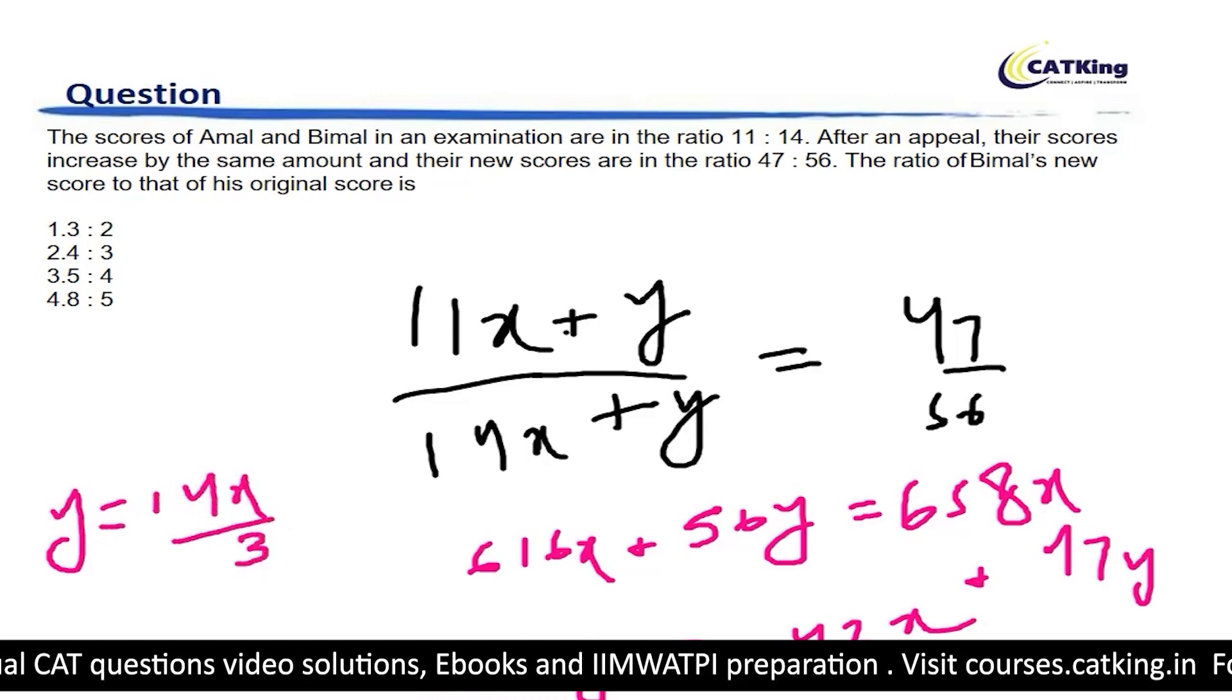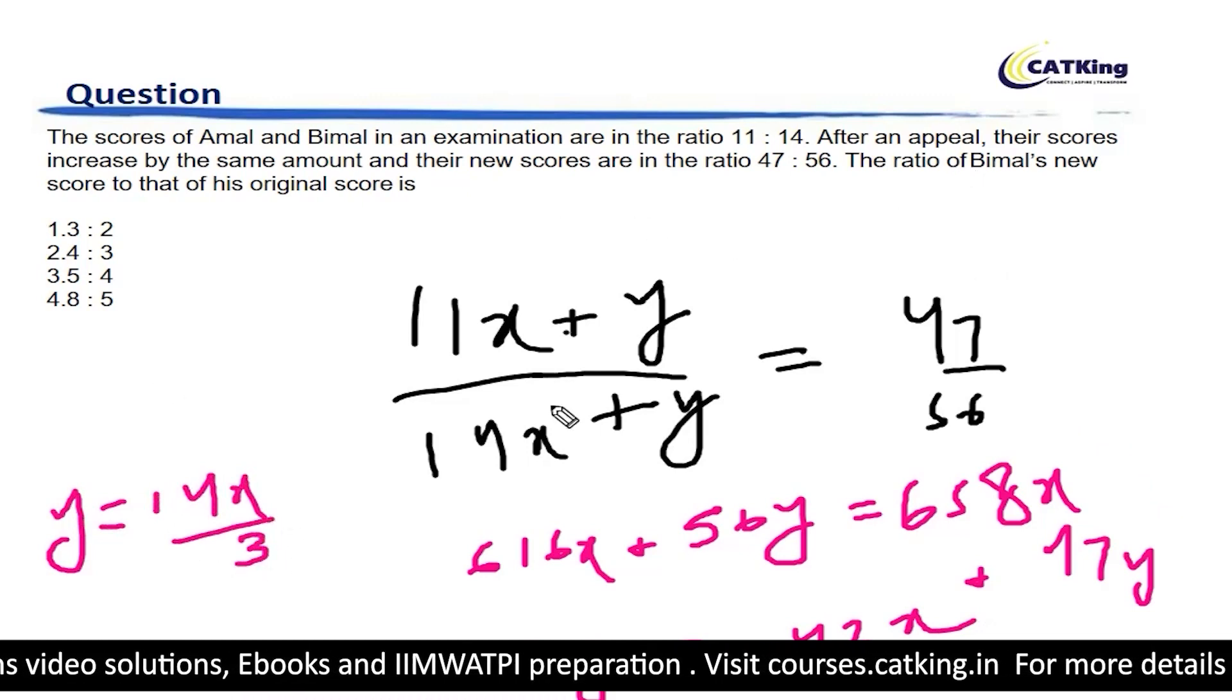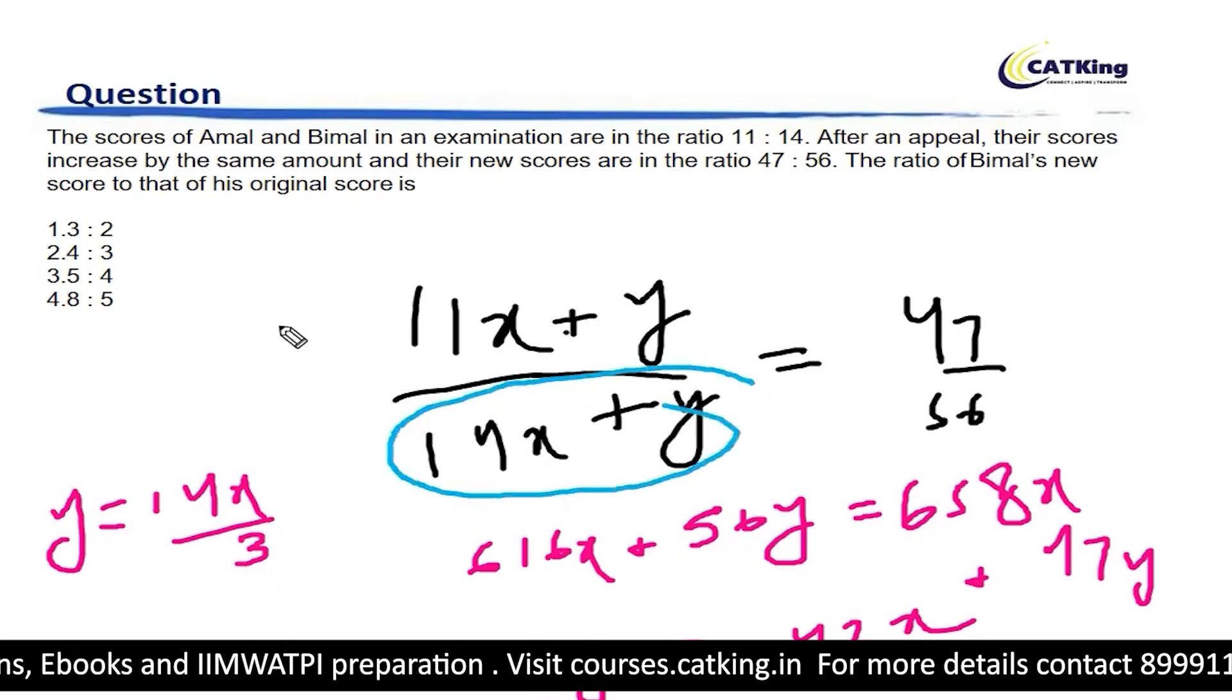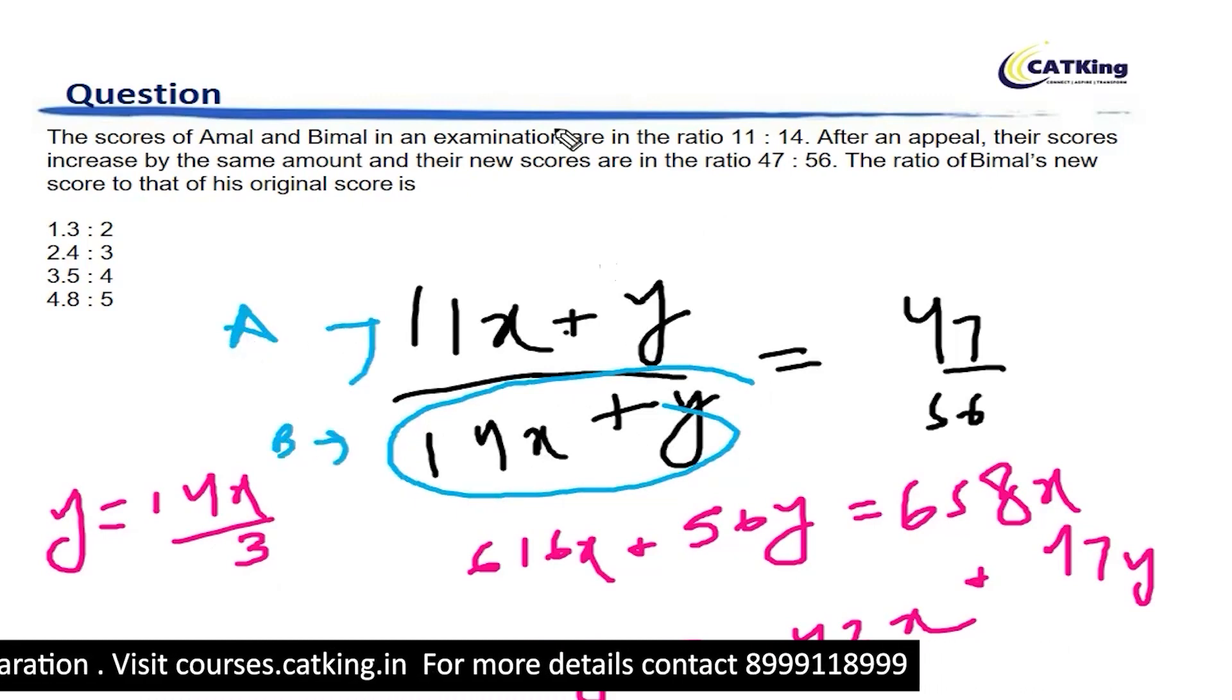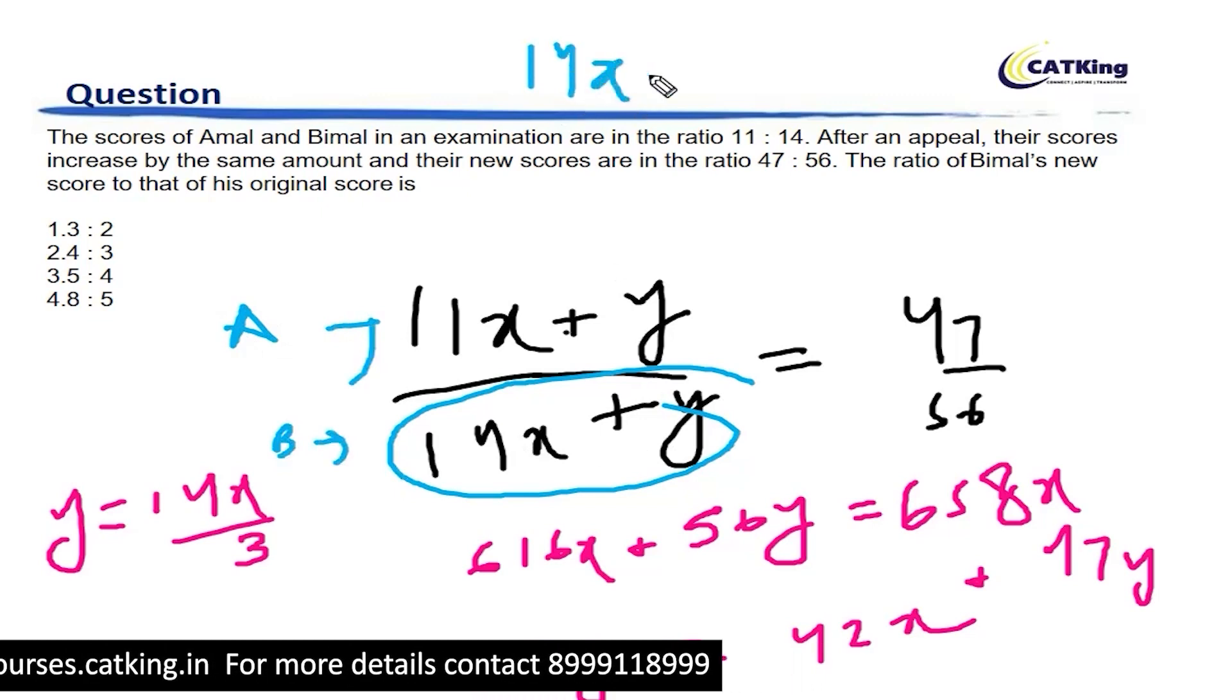Now the question is the ratio of Bimal's new score. New score is 14x plus y. This was Amal's and this was Bimal's new score. So 14x plus y is 14x plus 14x by 3.